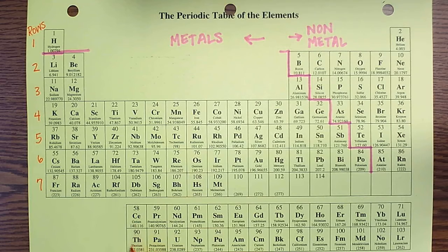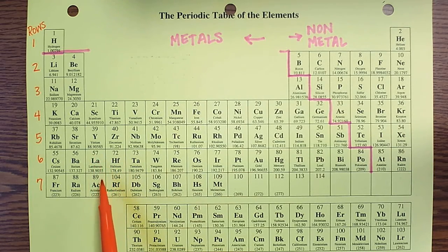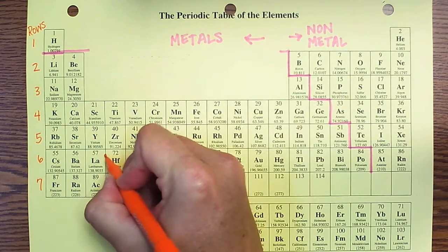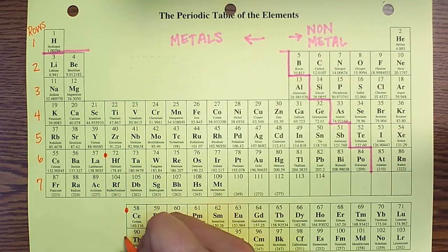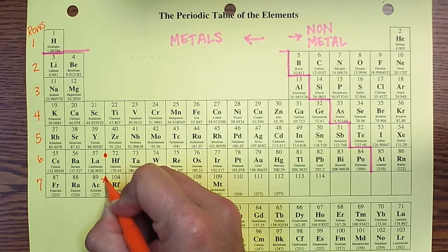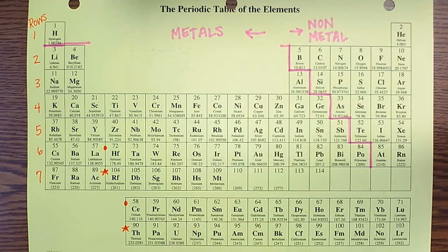You might wonder why I didn't number the bottom two sections as rows eight and nine. The reason is because those rows are down there not because they are the next two rows, but because they don't fit with the electron configuration happening above. The periodic table goes 55, 56, 57, then jumps to 72 — so elements like 58 are found in that bottom section, which is actually part of row six. Similarly, the row below that — starting around 87, 88, 89, jumping to 104 — is actually part of row seven. These electrons do some funky things in the atom, which is why they are grouped separately.